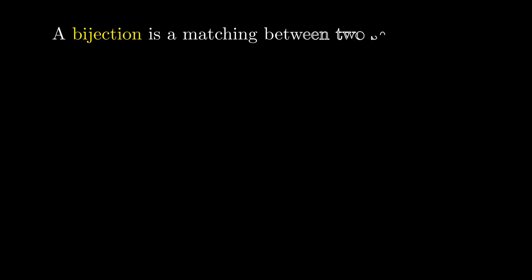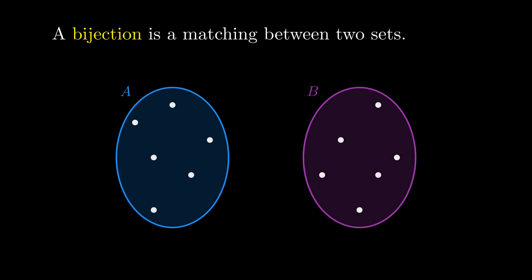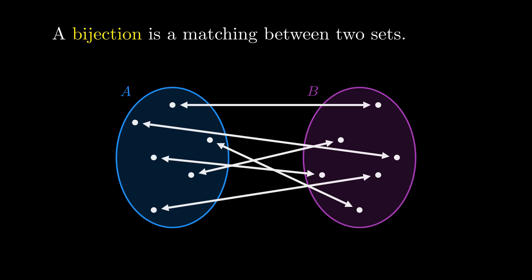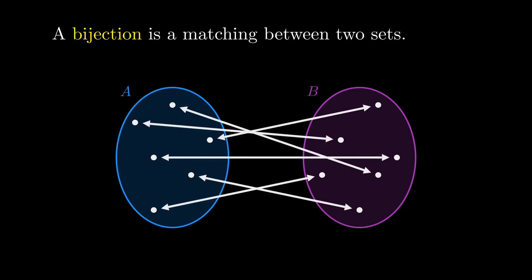A bijection is essentially a matching between two sets. Given one thing in set A, there's exactly one thing in set B that it matches with, and likewise for elements of B. Notably, there can be many bijections between two sets of the same size.